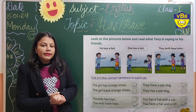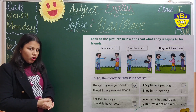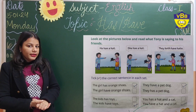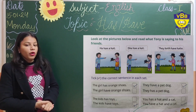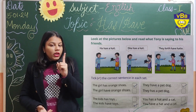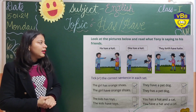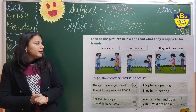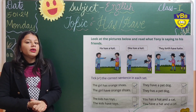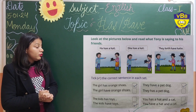Now read the third set: 'They have a pet dog' or 'They has a pet dog' — which is correct? Yes, the first sentence is correct — 'They have a pet dog' — because here we are talking about so many people. Now the last set: 'You have a hat and a cat' or 'You has a hat and a cat' — which is correct? Yes, the second sentence — 'You have a hat and a cat.'